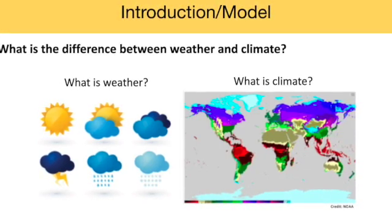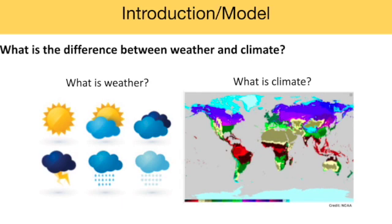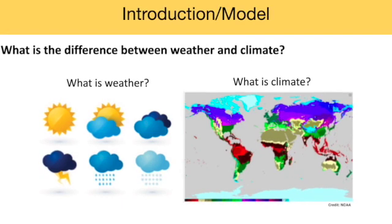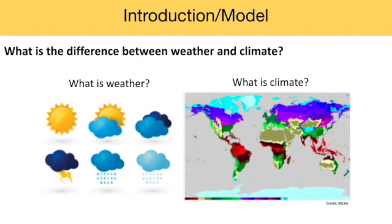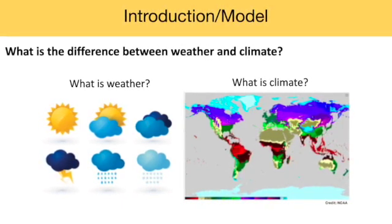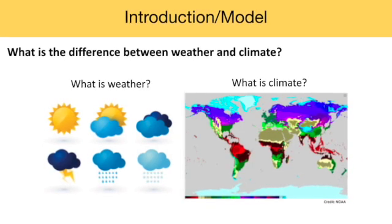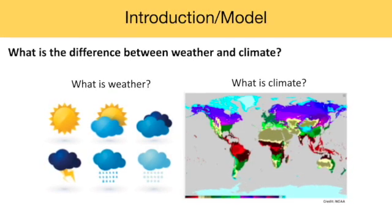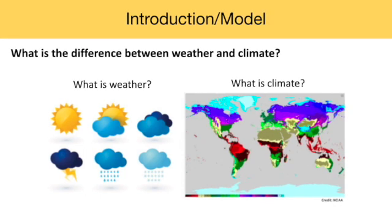In everyday life, we might use the two terms interchangeably or to casually describe similar things. Think of the climate control in your car, for instance — it's certainly not permanent. On day one, students will watch several videos and then self-assess their understanding of this important distinction.